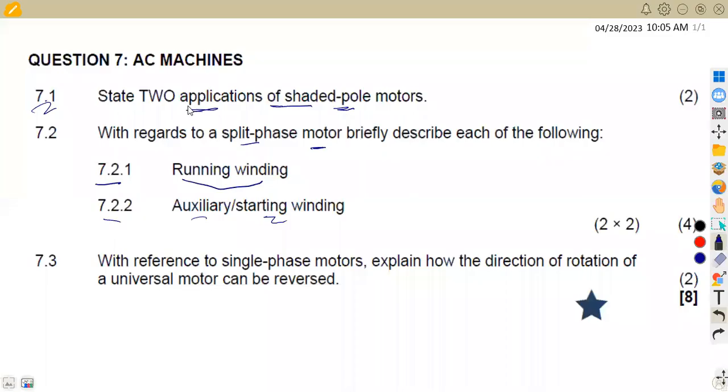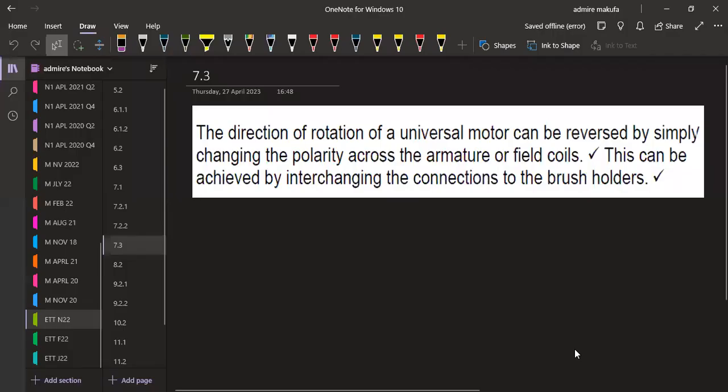Question 7.3: With reference to single-phase motors, explain how the direction of rotation of a universal motor can be reversed.